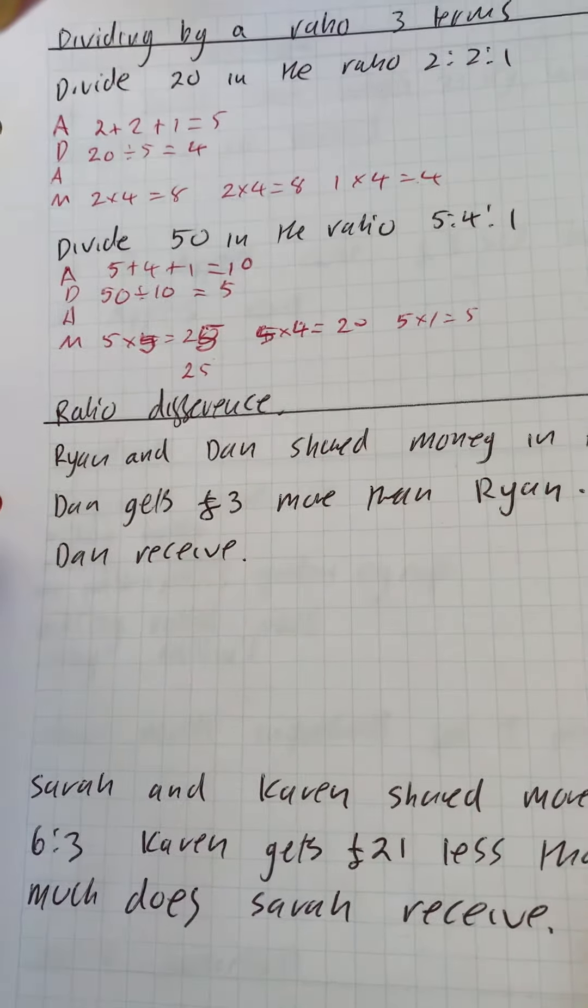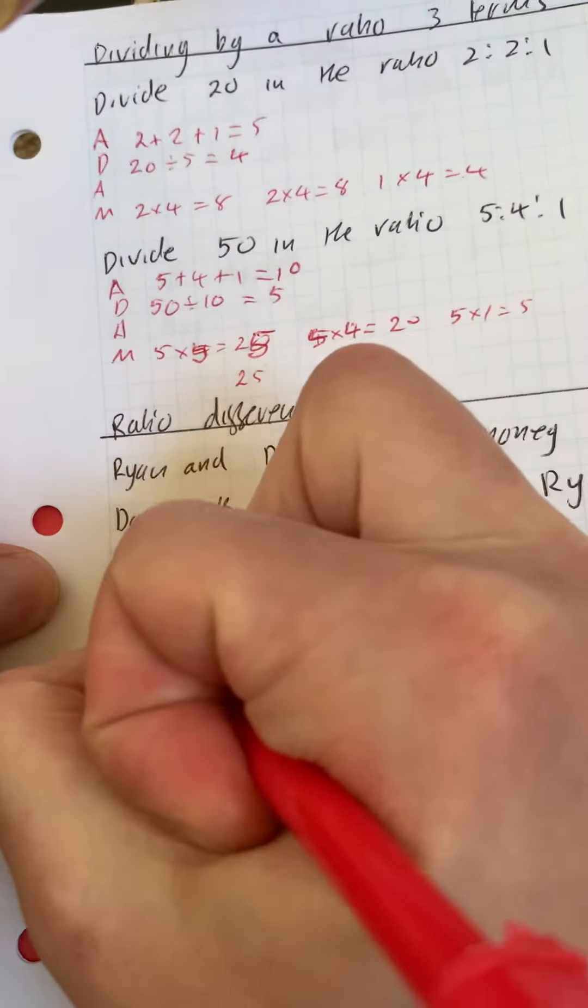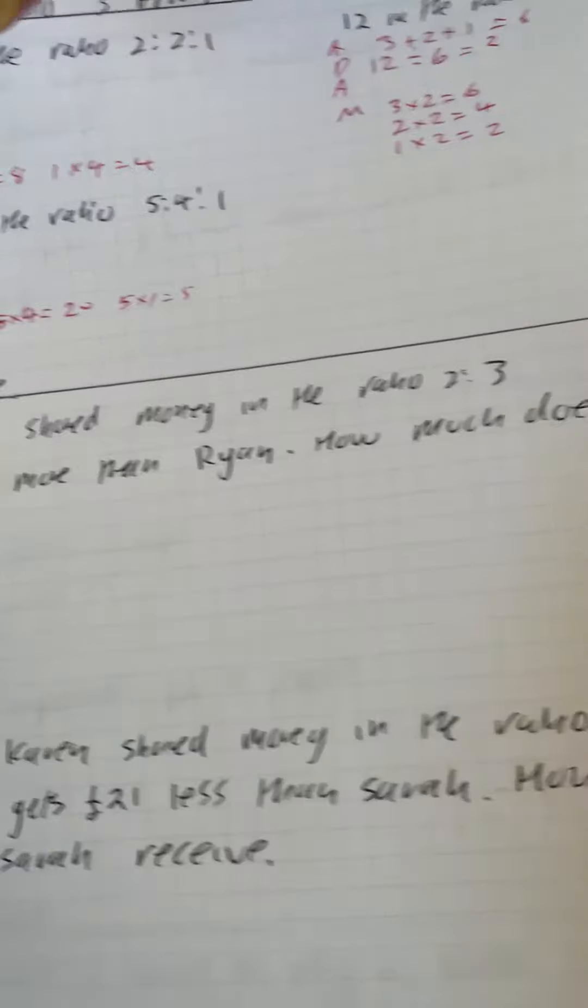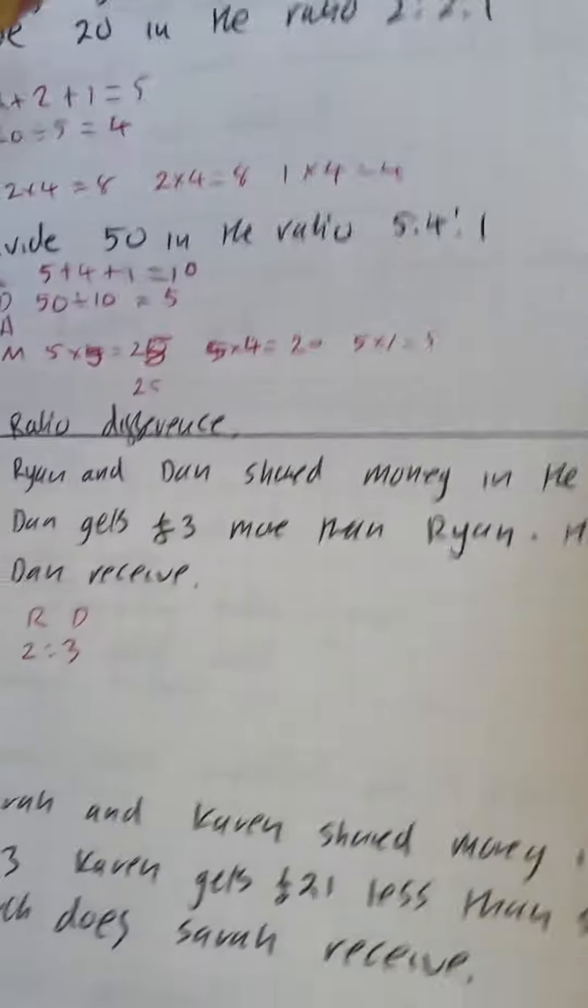Okay, this video is ratio difference. So it says Ryan and Dan share money in the ratio of two to three. So I'm just going to put Ryan, Dan, two to three. It says Dan gets three more than Ryan. How much does Dan receive?